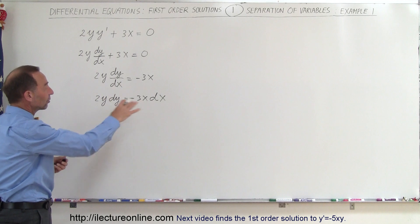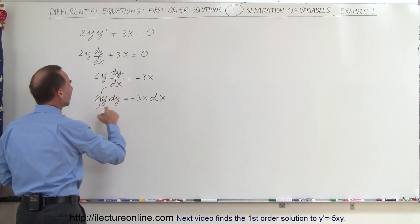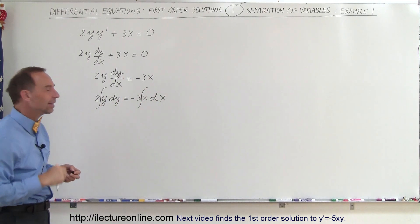And so now we have what we call separated the variables. We have the y's on the left side, the x on the right side. We can go ahead and integrate both sides of the equation. Notice that the constants come outside the integral sign.